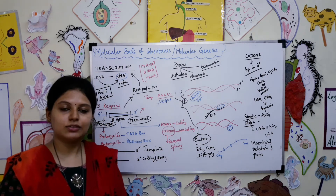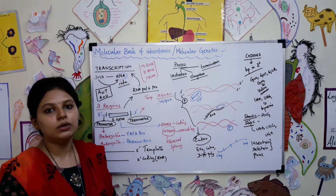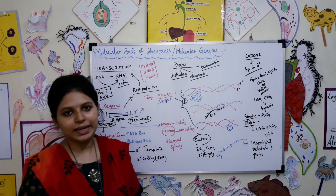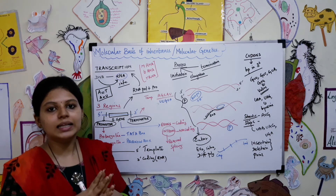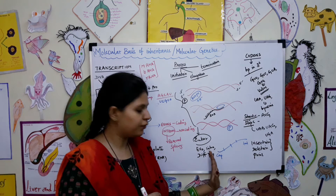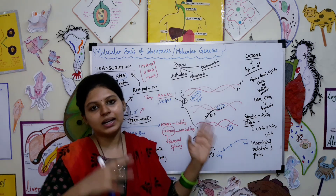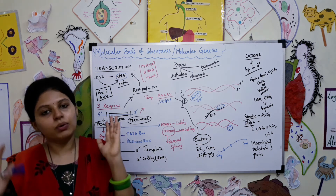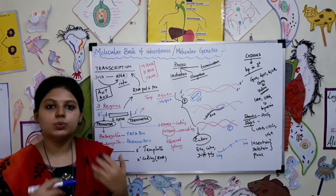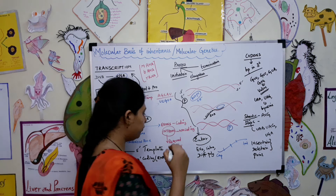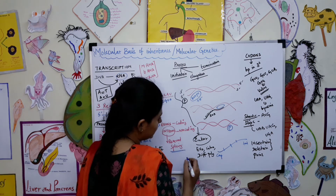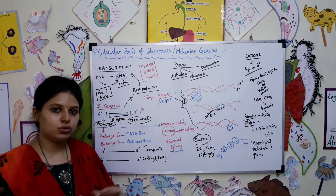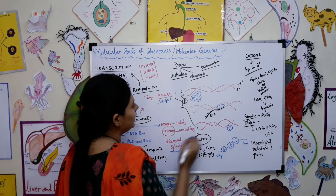These three processes — initiation, elongation, and termination — apply to prokaryotes. In eukaryotes, the structural genes have both introns and exons. The RNA will have a cap at its 5 prime end, and its 3 prime end undergoes polyadenylation. The introns are then removed with the help of splicing, leaving only the exons — the coding regions.